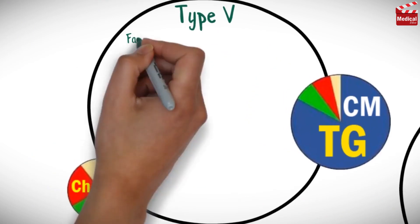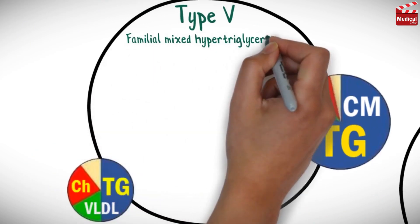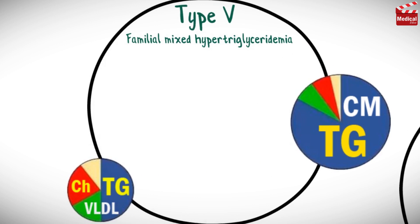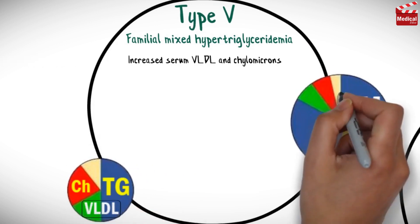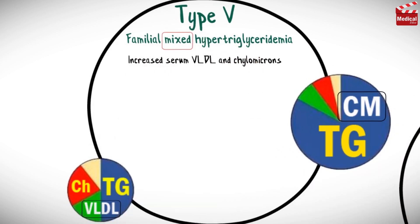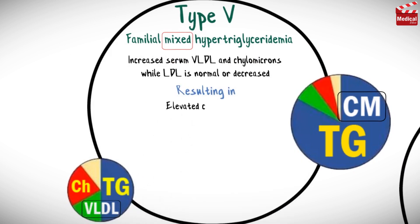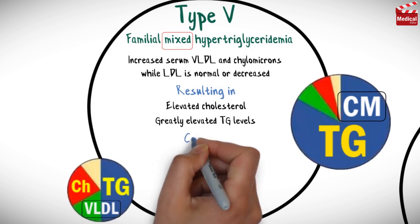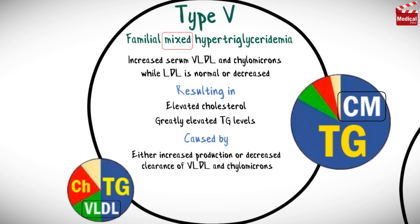Type 5, familial mixed hypertriglyceridemia. This type is characterized by increased serum VLDL and chylomicrons — that's why it's called mixed hypertriglyceridemia — while LDL is normal or decreased. This results in elevated cholesterol and greatly elevated triglycerides levels. This condition is caused by either increased production or decreased clearance of VLDL and chylomicrons.